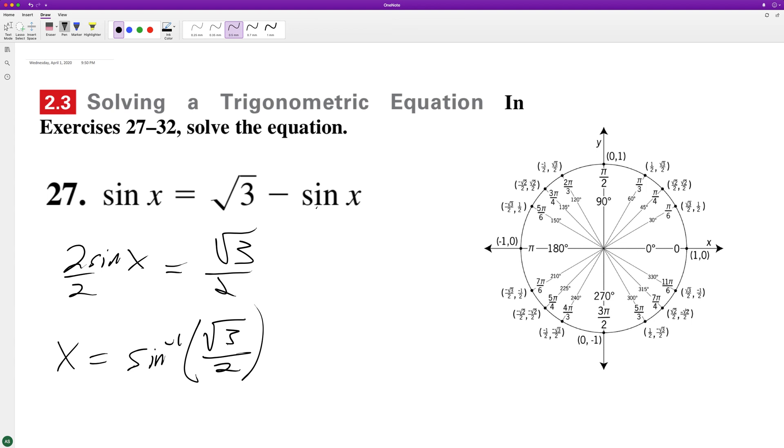And that's valid from 0 to 2π, so that's going to be where is sine equal to the square root of 3 over 2.